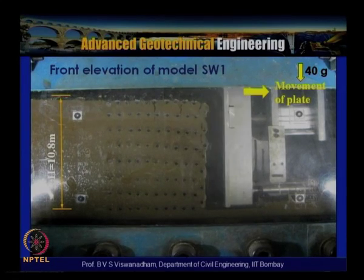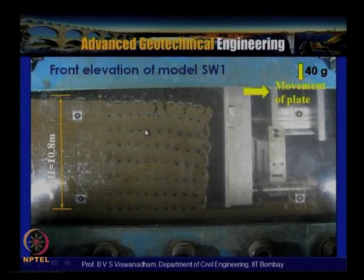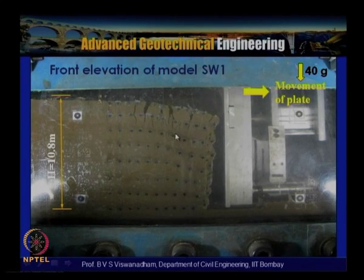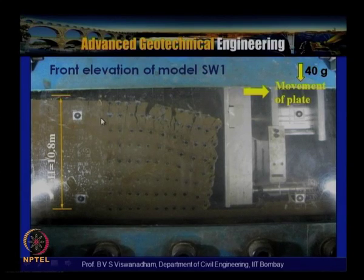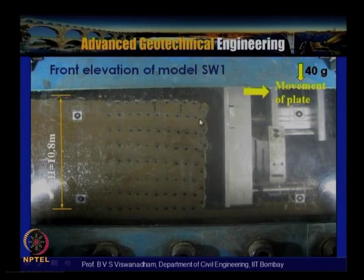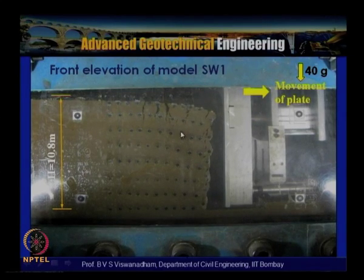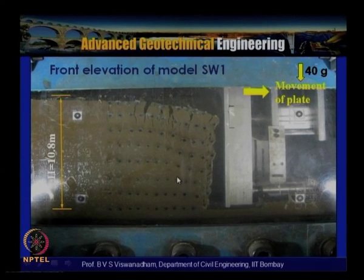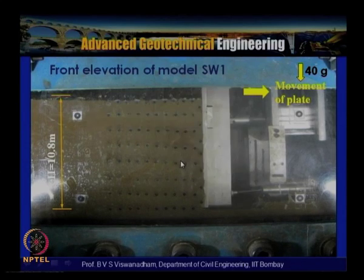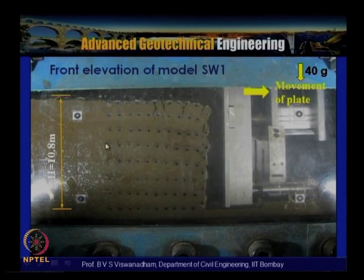A reinforced soil wall constructed with marginal backfill material compacted at the wet side of optimum shows multiple tension cracks forming, leading to excessive deformations in the uppermost zone of the wall. This is similar to what would happen for a 10.8-meter wall in the field.